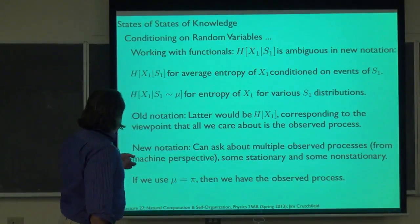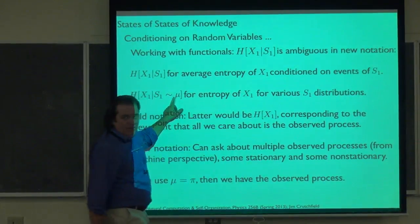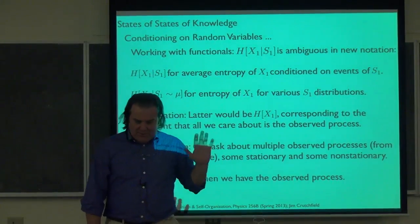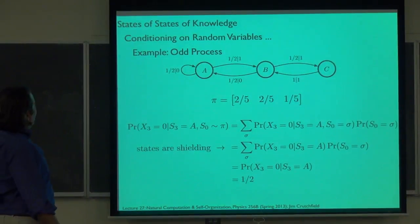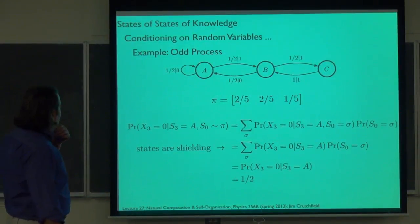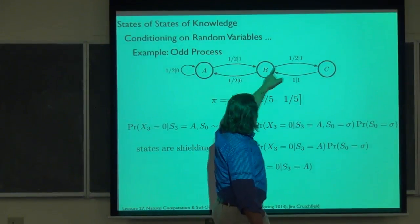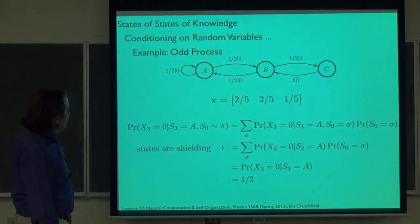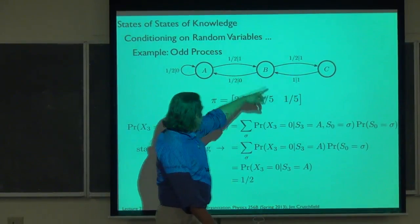For example, the odd process: this generates one-one or three-ones and then a zero — the odd analog of the even process. The asymptotic distribution is two-fifths, two-fifths, one-fifth for states A, B, C. We can ask about what's the probability at time three that we see a zero, given that at time three we were in state A and the initial state distribution was distributed according to pi. Because of causal shielding, this probability doesn't depend on the start state — it just depends on the immediately preceding state.